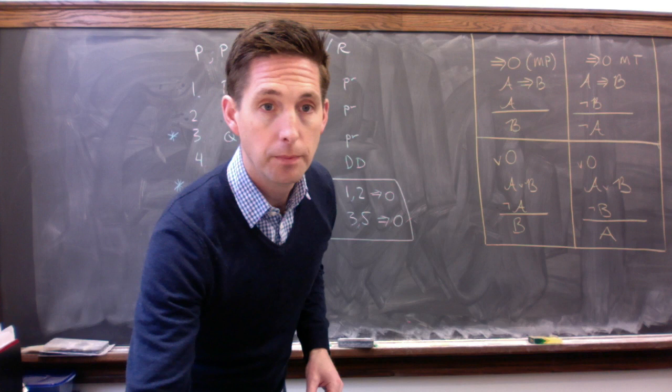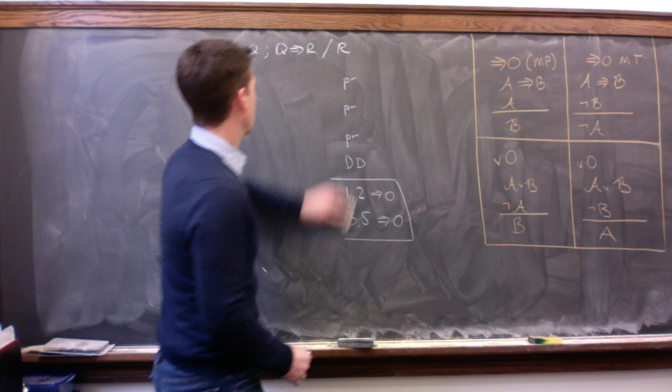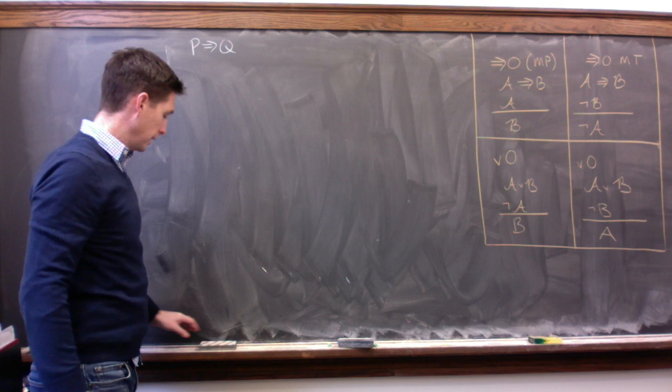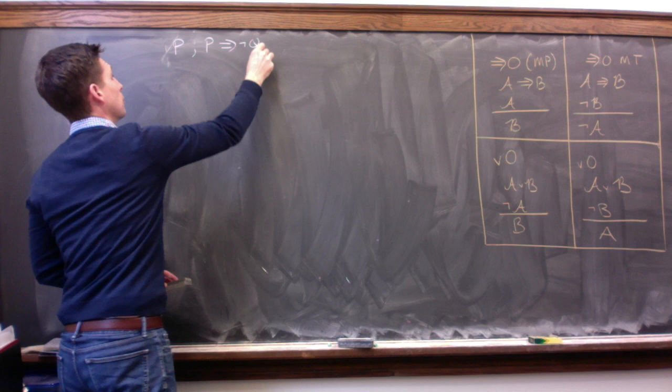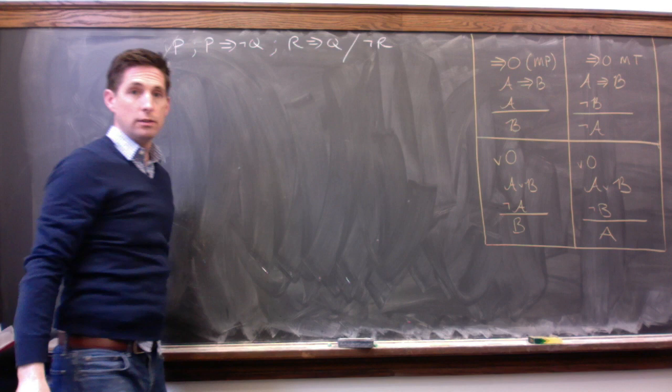Let's try one more example here. Or maybe two more examples. Let's try the following. And this is the next example on the slide show if you're following along. Premise one is P. Premise two is P arrow not Q. Premise three is R arrow Q. And we want to show not R. So we're going to try to... Our conclusion is not R.